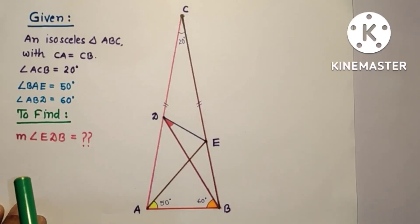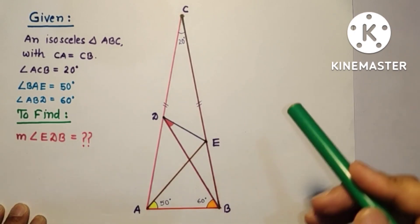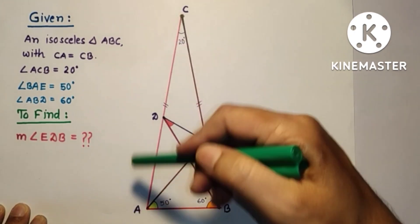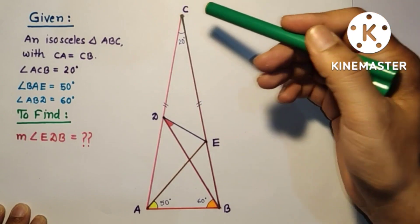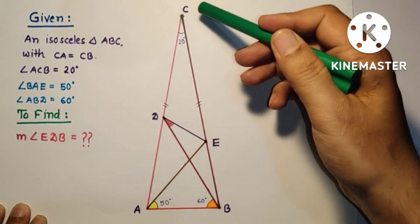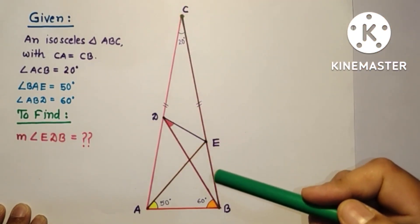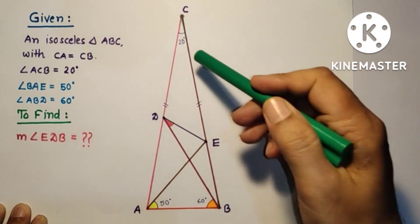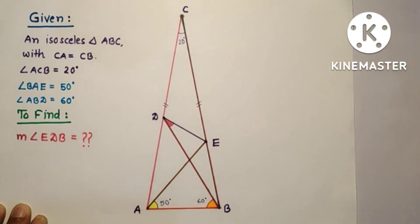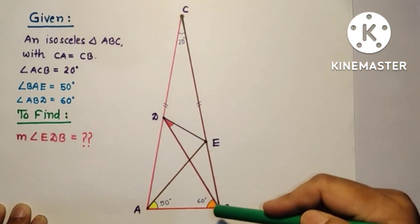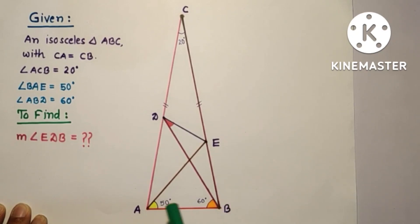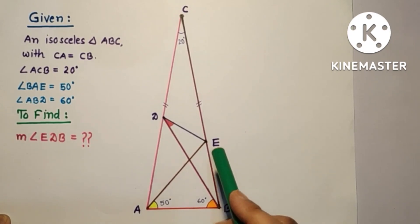Hi everyone. In this problem we are given an isosceles triangle CAB in which side CA is equal to CB and angle ACB is equal to 20 degrees. Angle ADB is 60 degrees and angle BAE is equal to 50 degrees, and we have to find the measurement of angle EDB.